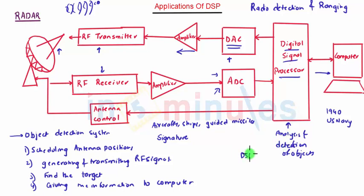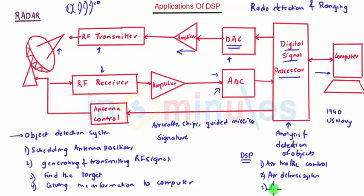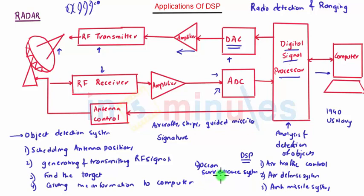DSP has many advantages. Applications of radar include air traffic control, air defense systems, anti-missile systems, ocean surveillance systems, and many more. Nautical radar is used to locate landmarks and other ships, and ground penetrating radar is used for geological observations.